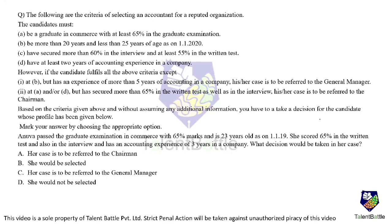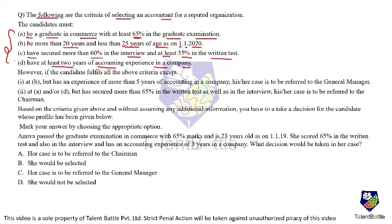Now we will solve a question from the concept of attention to details. They will give you some criteria and a case, and you need to judge whether the particular case can be approved or should be referred to someone. The criteria for selecting an accountant: the candidate must be a commerce graduate with at least 65%, be more than 20 and less than 25 years of age on 1-1-2020, score more than 60% in the interview and at least 55% in the written test, and have at least two years of accounting experience.